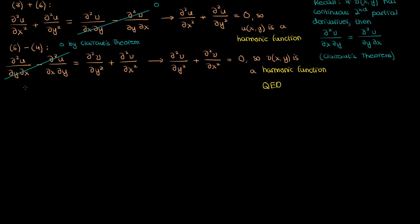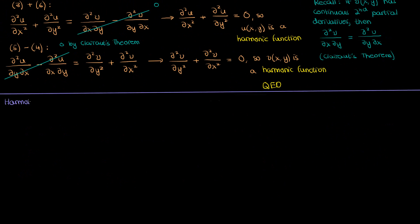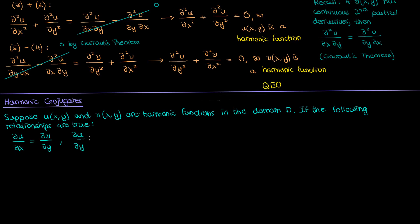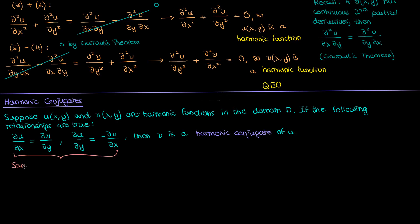Now that we've discussed some preliminaries behind harmonic functions, let's delve into harmonic conjugates. Suppose that u and v are two functions of x and y that are both harmonic functions in the domain D, so they satisfy Laplace's equation in that domain. v is said to be a harmonic conjugate of u if the following relationships are satisfied: the partial of u in x equals the partial of v in y, and the partial of u in y equals the negative of the partial of v in x. Keep in mind that this isn't the same as the complex conjugate — it's the harmonic conjugate. These equations should look familiar because they're the Cauchy-Riemann relations.